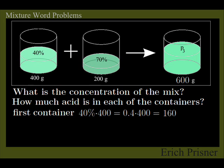Since the first container contains 400g of a 40% solution, it contains 40% of 400g. 40% times 400 equals 0.4 times 400 equals 160g of pure acid. And the remaining 240g are just water.